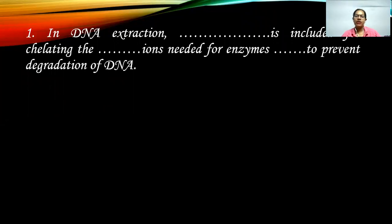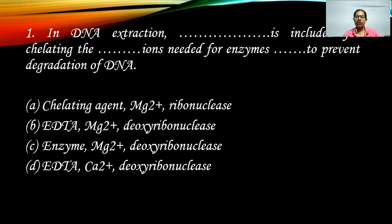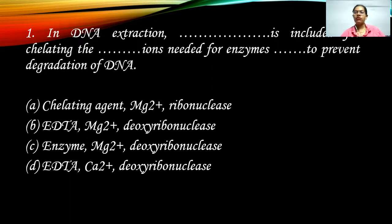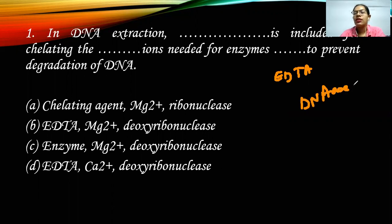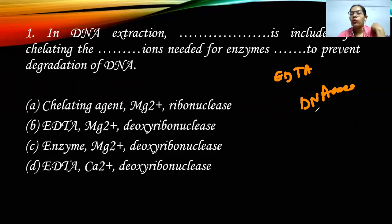The first question: in DNA extraction, EDTA is included to chelate the Mg2+ ions which are needed for enzymes, to prevent the degradation of DNA. The options are chelating agent, Mg2+ plus ribonuclease, and Restol. When we talk about DNA extraction, we always use the chelating agent EDTA. EDTA chelates the Mg2+ ions needed for DNases. If we do not prevent enzymatic activity, the DNA will get fragmented — it will be chopped off.